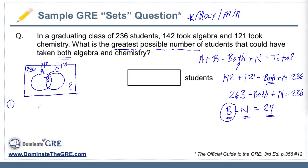Scenario one would be an extreme where there is no overlap at all. Couldn't the groups look like this, where this is algebra and this is chemistry? 142 only take algebra and 121 only take chemistry. Actually that isn't quite right because in that case there would be nobody in both minus N equals positive 27. That would mean like a negative 27 people in the neither category. That's impossible.